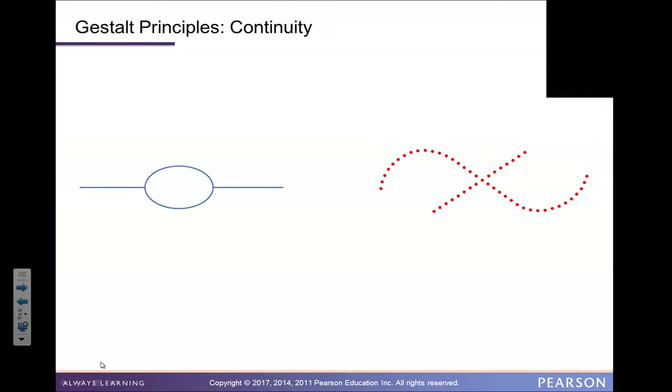Continuity is another Gestalt principle. Our brain wants to make a sideways figure eight out of what may not even be a figure eight in reality. Or on the left, we might want to make one thing out of what really are two things — an oval on top of a straight line.